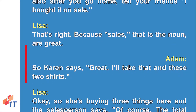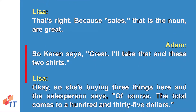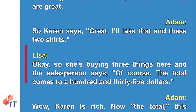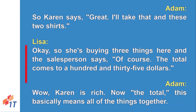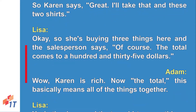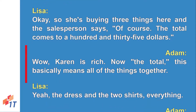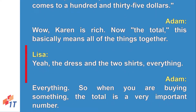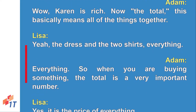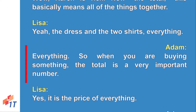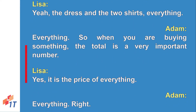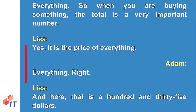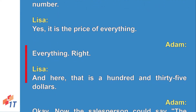Karen says 'Great, I'll take that and these two shirts,' so she's buying three things. The salesperson says 'Of course, the total comes to 135 dollars.' The total basically means all of the things together — the dress and the two shirts, everything. When you are buying something, the total is a very important number — it's the price of everything.